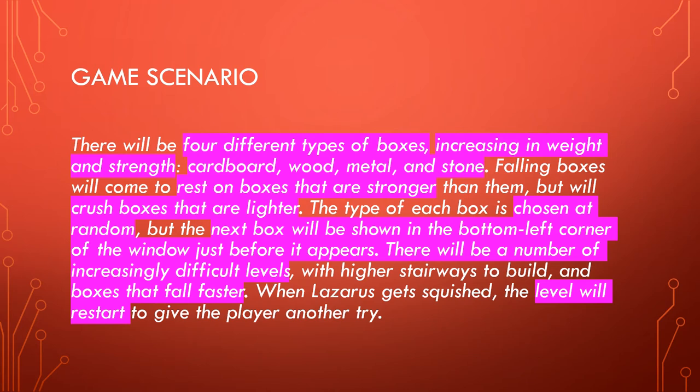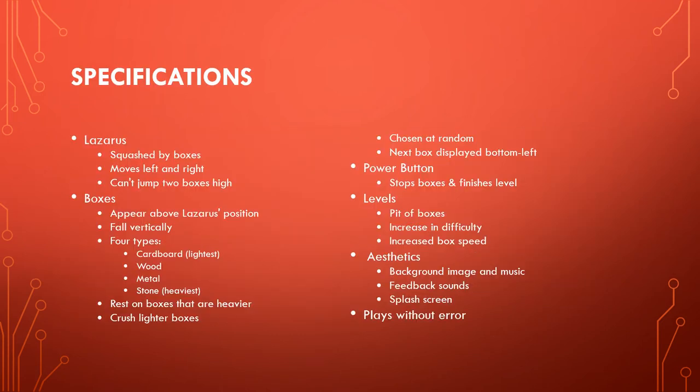The type of each box is chosen at random, but the next box will be shown in the bottom left-hand corner of the window just before it appears. There will be a number of increasingly difficult levels with higher stairways to build and boxes that fall faster. When Lazarus gets squished, the level will restart to give the player another try.